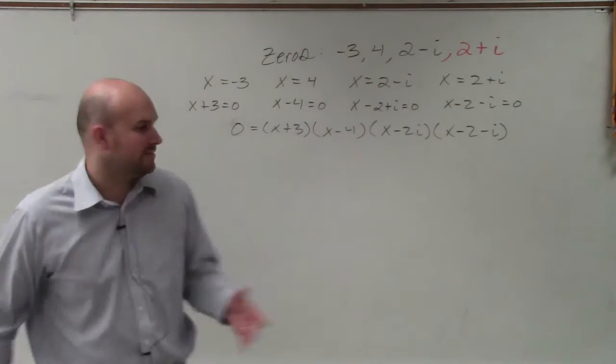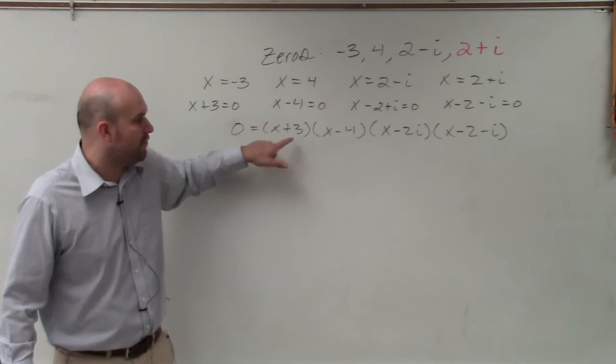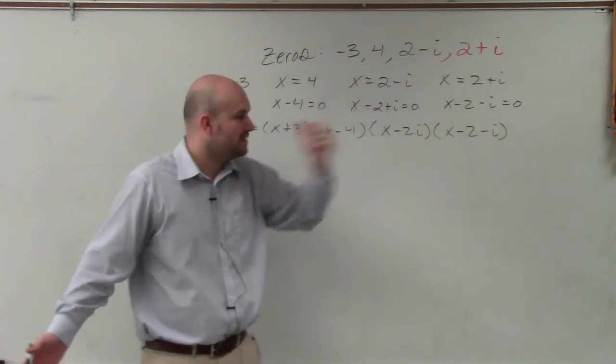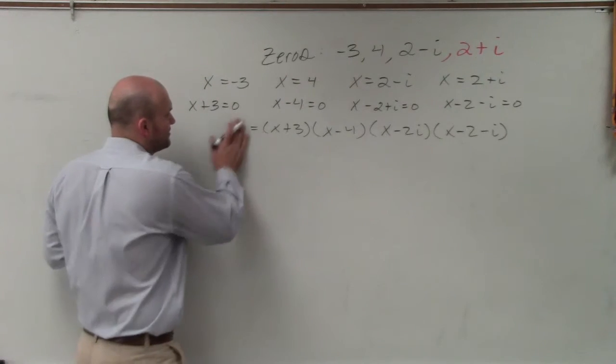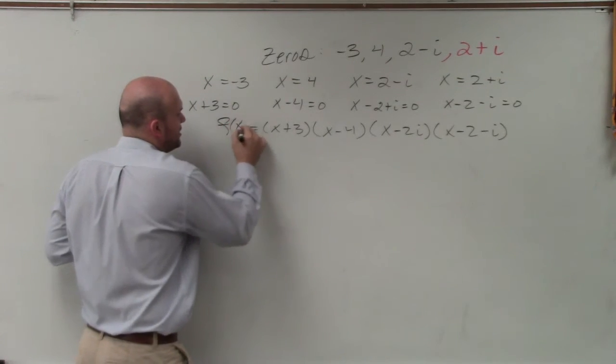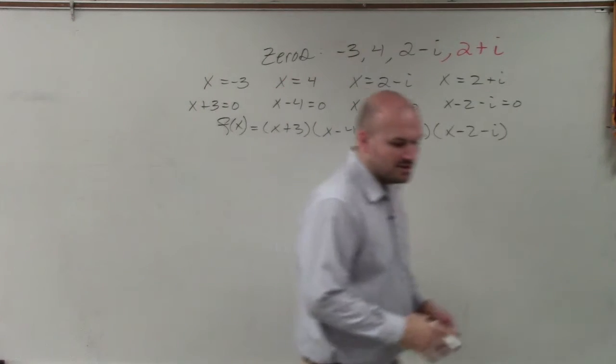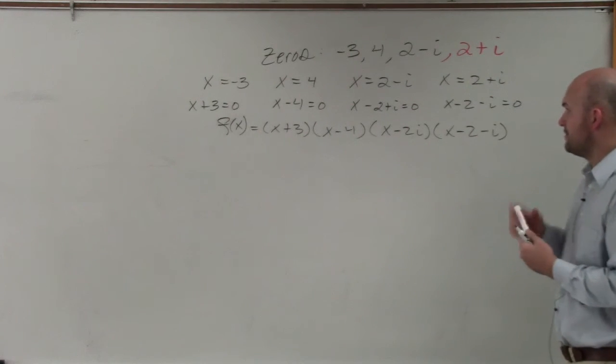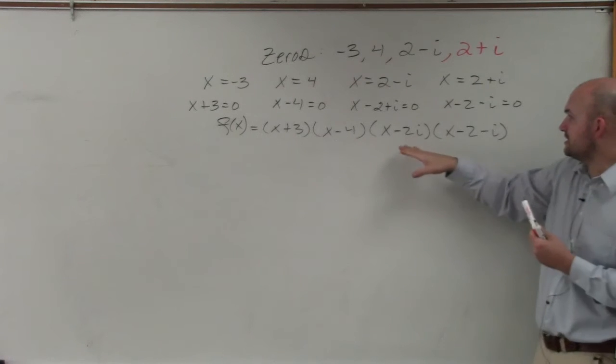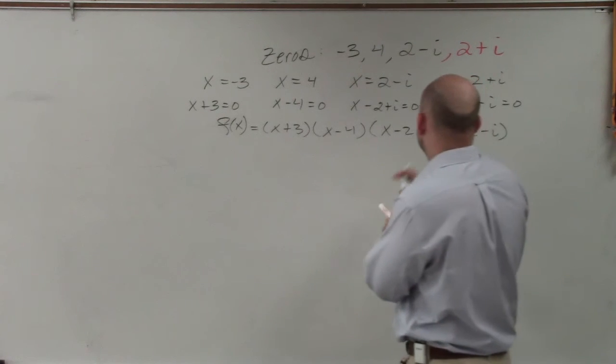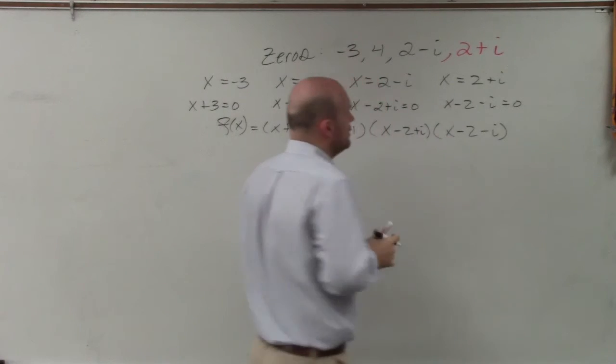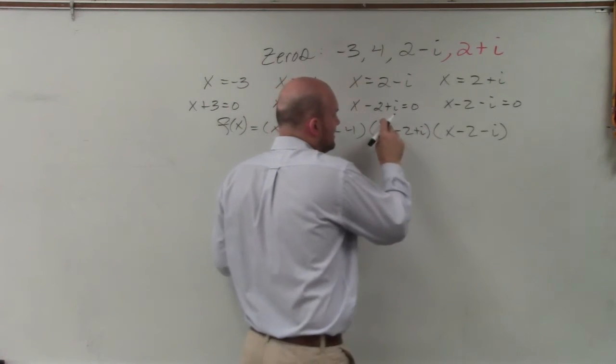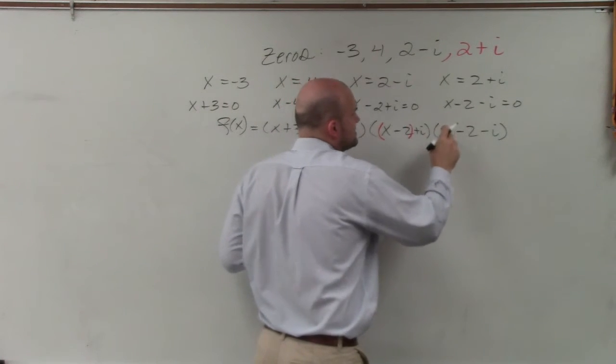Now in reality, if we had that in factored form, we would set them all equal to 0, solve for x, and have our solutions. But we're not actually trying to set it equal to 0. We're actually trying to set it equal to a polynomial. When you're doing a problem like this, I always like to do the i's first.